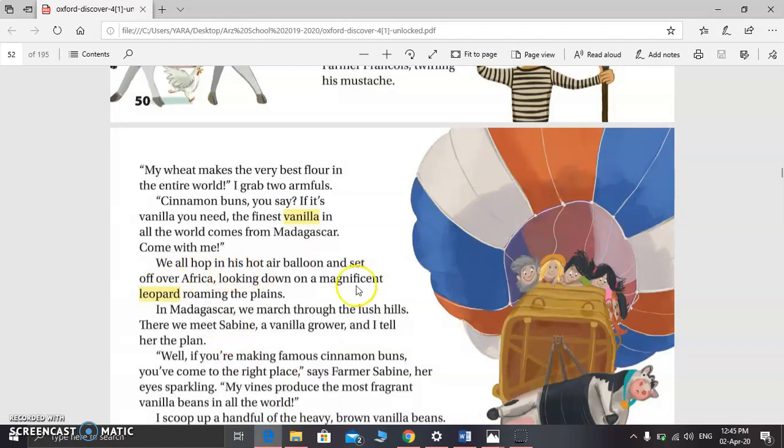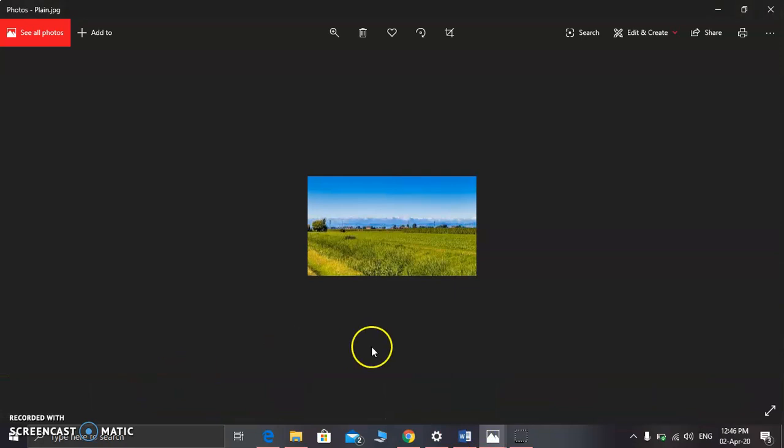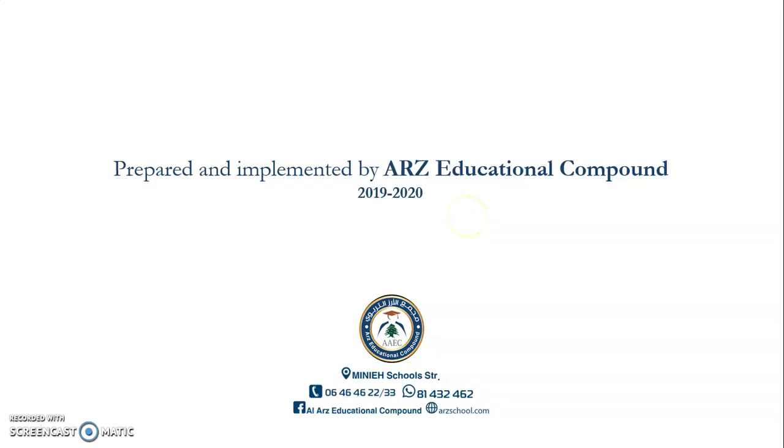Looking down on a magnificent, means amazing, leopard. I suppose everyone knows the leopard, this animal that looks like a tiger with spots, roaming the plains. Roaming, turning, wandering around the plains. Let me show you the plains, which are large areas of greenland without a lot of trees. That was our reading lesson for today.